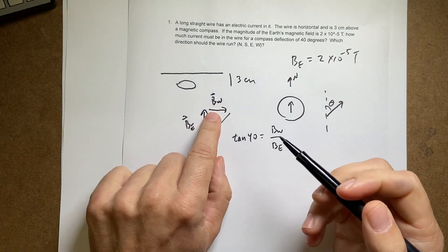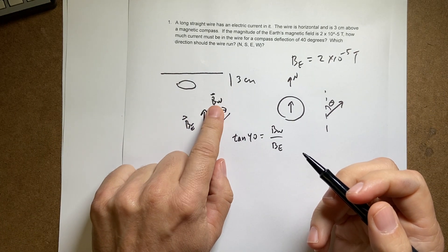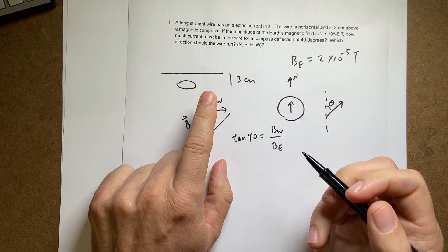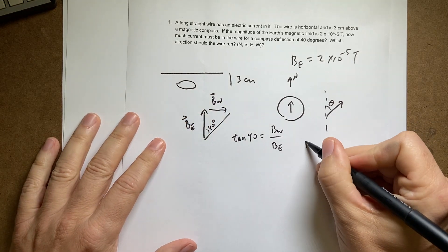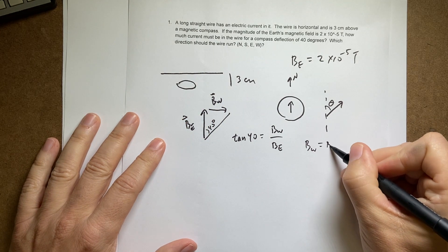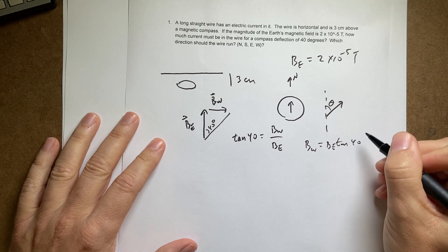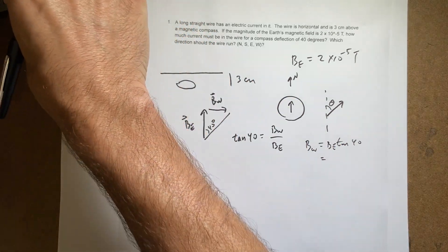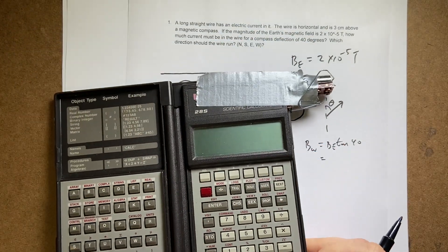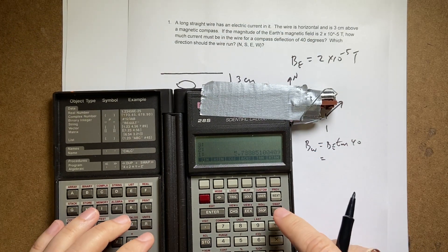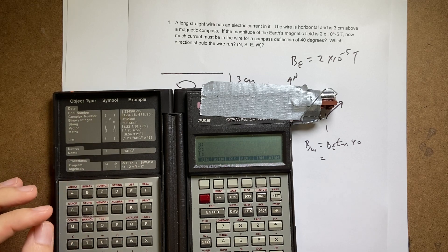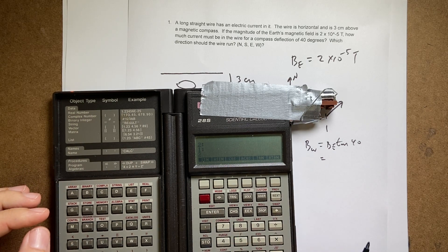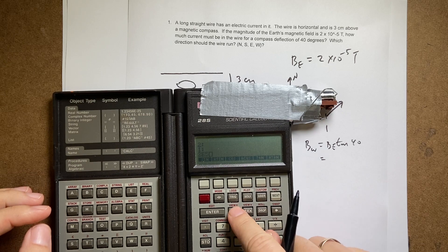Okay. Let's do the first part and calculate the magnitude of this magnetic field due to the wire. So this is just going to be B wire is B earth times the tangent of 40. And if I use my calculator. Okay. So I'm going to say the earth's magnetic field is 2 times 10 to the negative 5th.